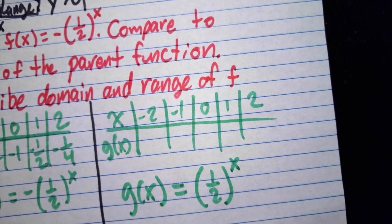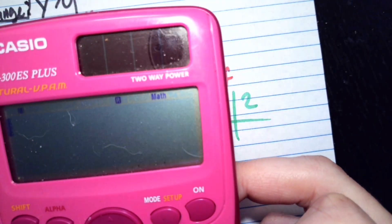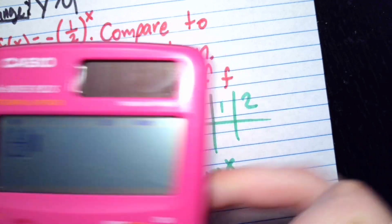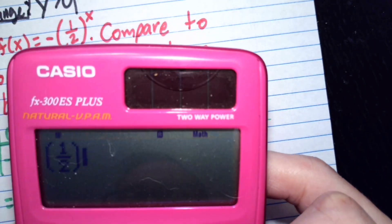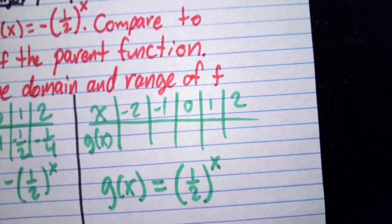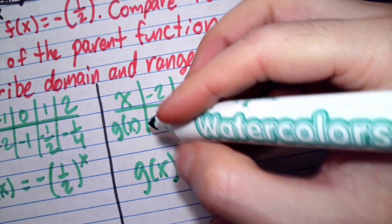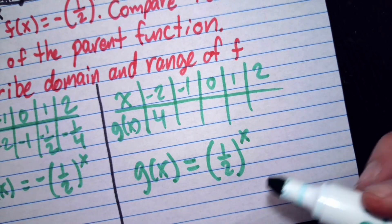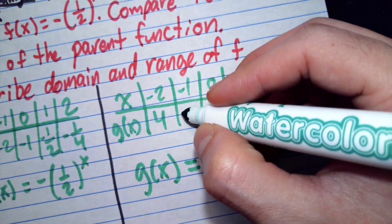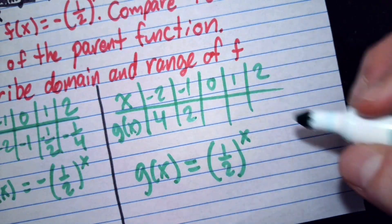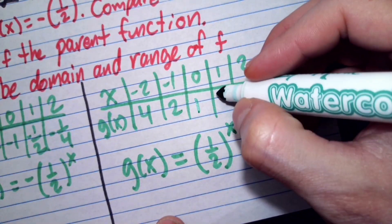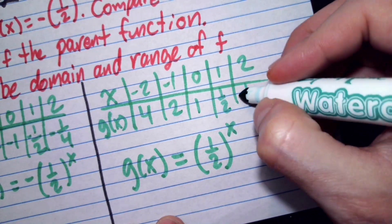So once again, we're going to get that 1 half to the negative second power is going to give us 4. And then 1 half to the negative 1 power is going to give us 2. And then pretty much the same values as these, but positive. So it's not a lot of surprise.